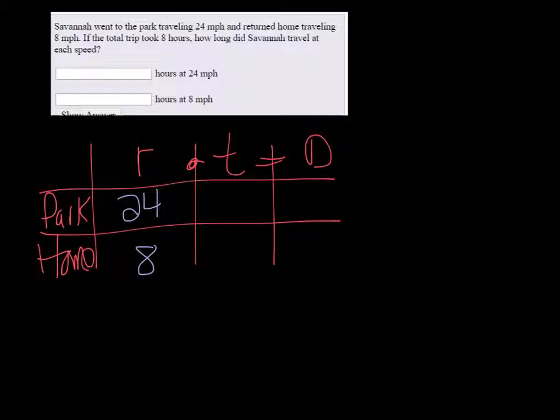We don't know how long it took her to go to the park, so we'll just call that T. But we know the total time was 8 hours, so we subtract however long it took her to go to the park from 8 to get how long it took her to go home.